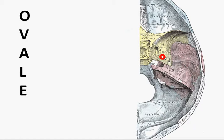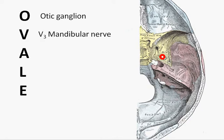It's very easy to remember because we can take the letters of OVALE. O is the otic ganglion, which is just inferior to it in the infratemporal fossa. V is for the third division of the trigeminal nerve, i.e. the mandibular nerve, so we write that as V3.